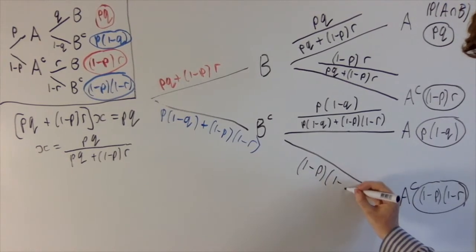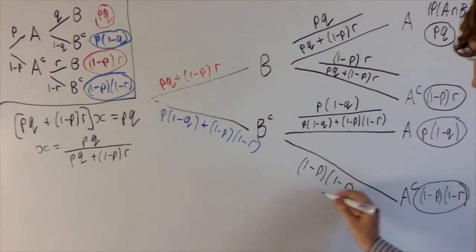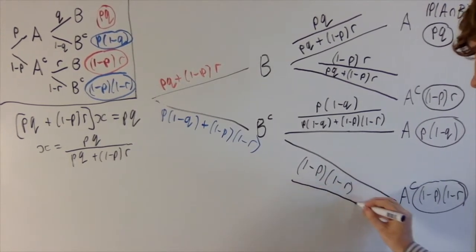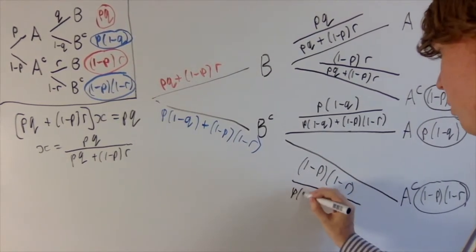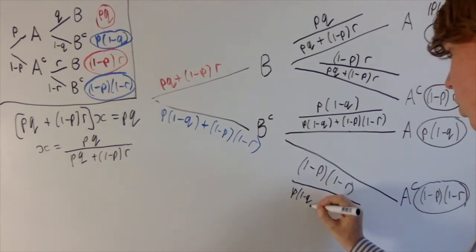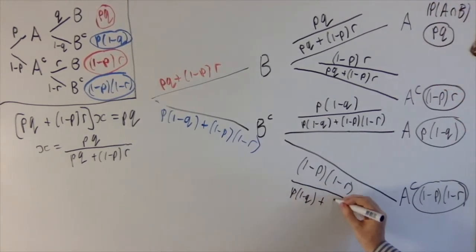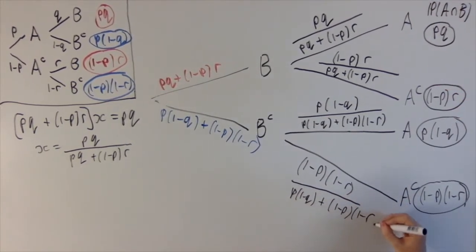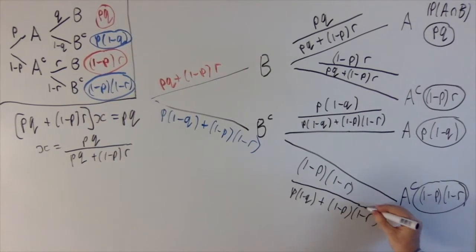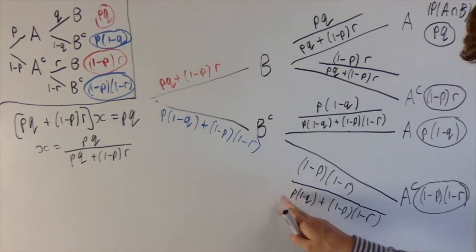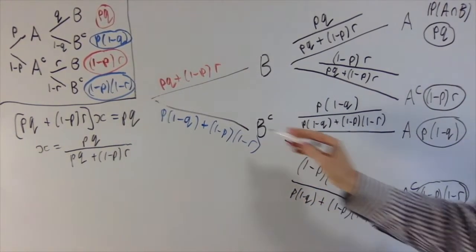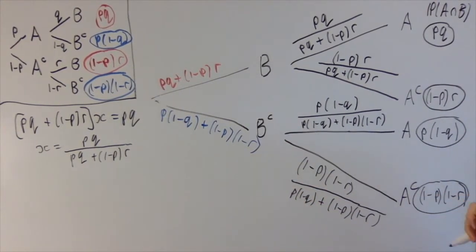And the last branch is (1 minus P)(1 minus R) divided by [P(1 minus Q) plus (1 minus P)(1 minus R)]. And there you go — we've successfully reversed the order of this probability tree. It started off where A is decided first and then B gets decided, and here we've now flipped this and worked out what all the probabilities need to be.